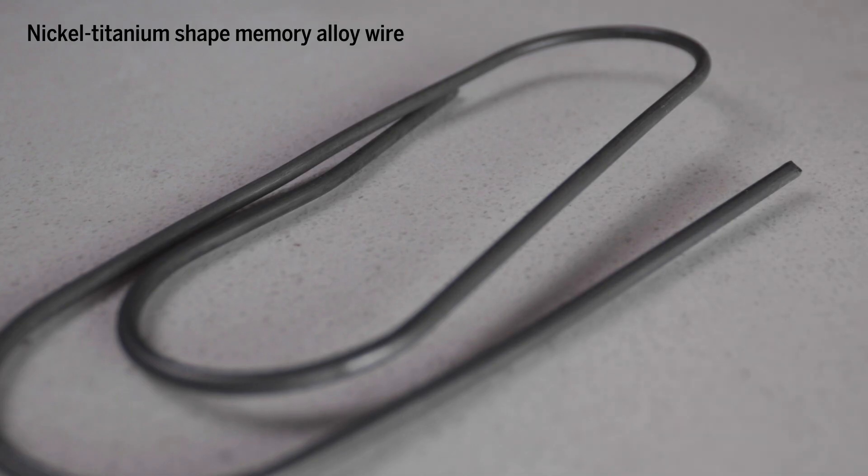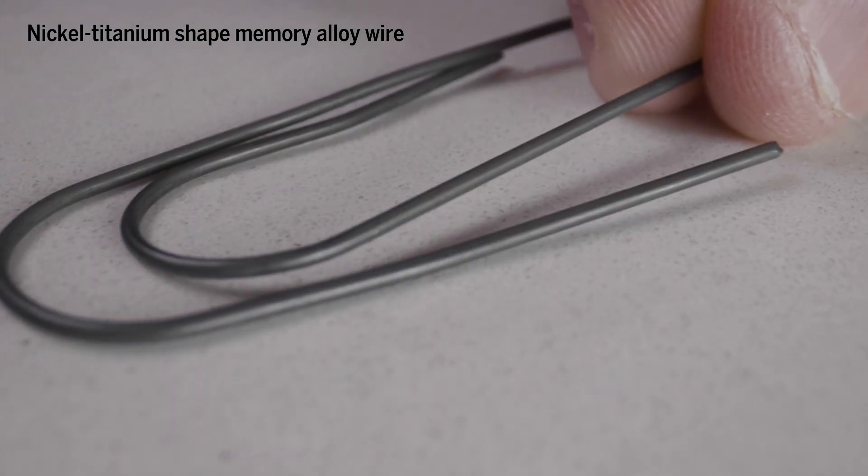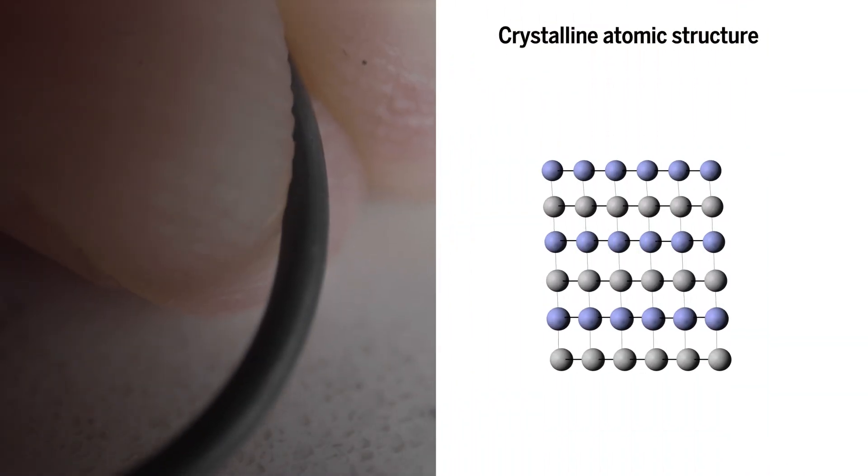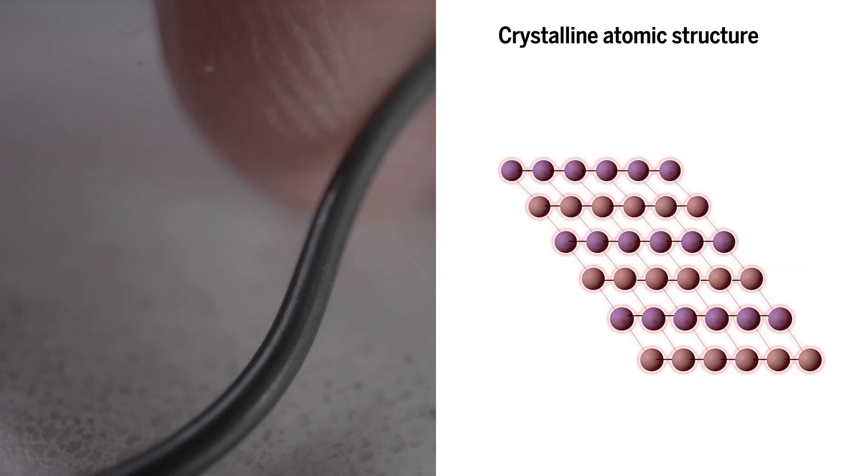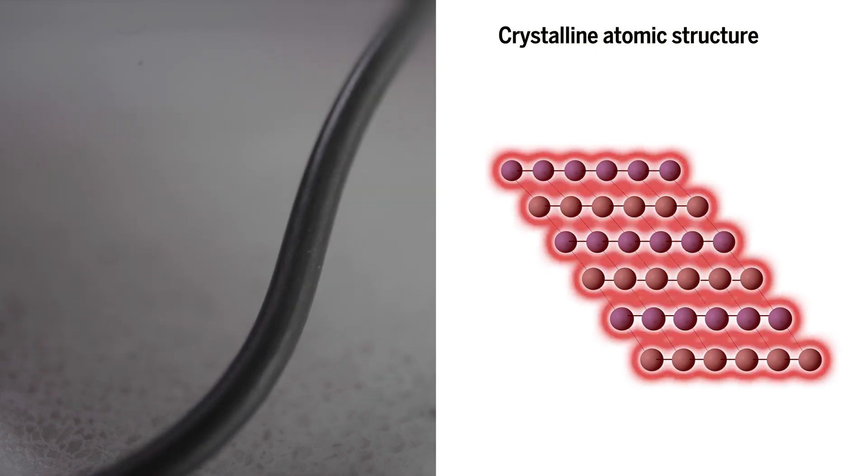Shape memory alloys have these special properties. So by stretching it, it's essentially going from one crystalline structure to another. And in doing so, it necessarily has to give off heat associated with the transformation.